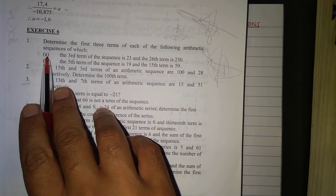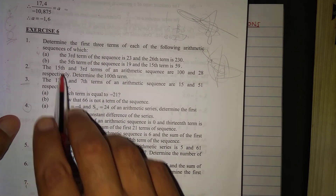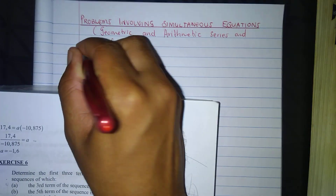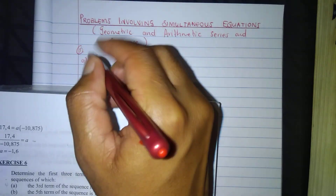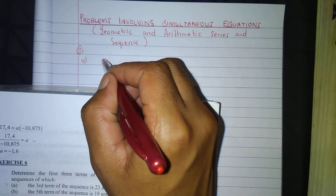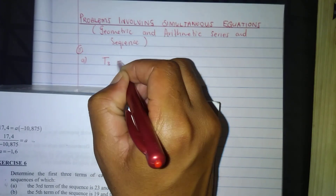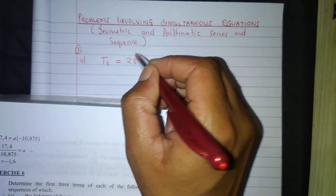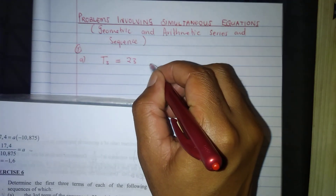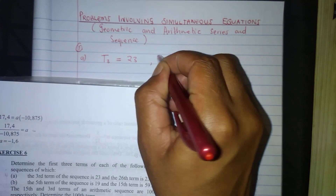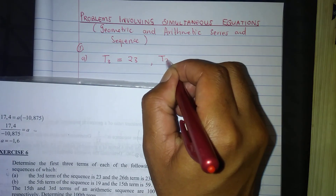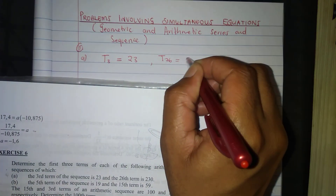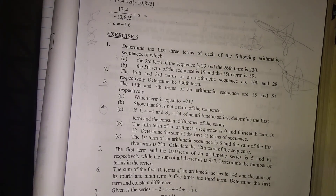In our case, 1A: the third term T3 of the sequence is 23, so T3 is equal to 23. And then the 26th term, T26, is equal to 230.